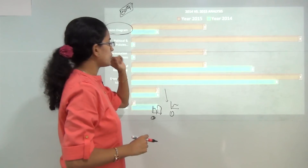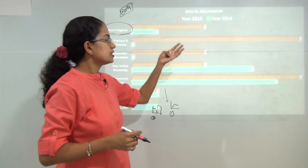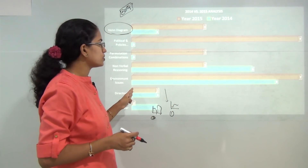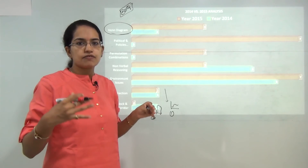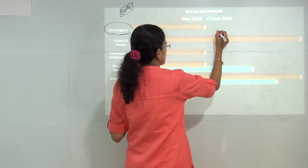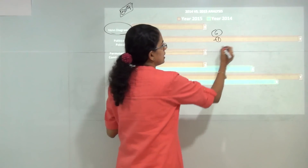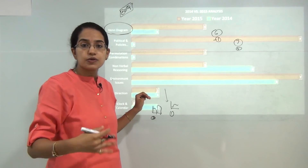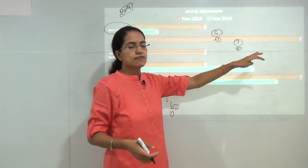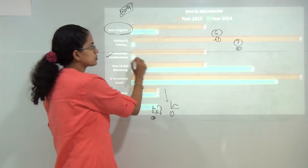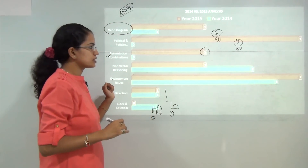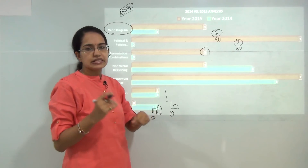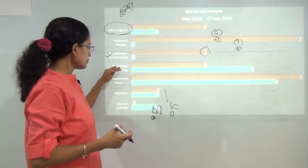Passages were based on political science and recent policies, totaling seven questions this time. Nearly all passage questions were independent, with a single question per passage. This means you need a very good reading speed, developed through daily newspaper reading. There were around three questions on permutation and combination, which were not asked at all in 2014, meaning you need to know the basics of advanced maths.